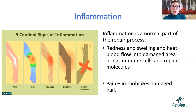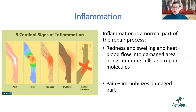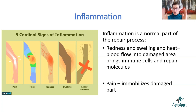Why we get concerned about inflammation is that sometimes the immune system overreacts and can cause collateral damage — so much inflammation that it damages surrounding cells. Sometimes we take anti-inflammatories to keep the response restricted to the site of injury.